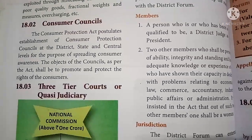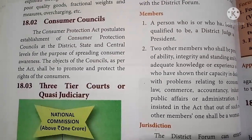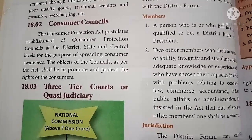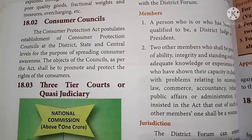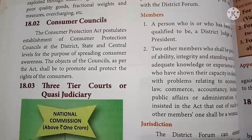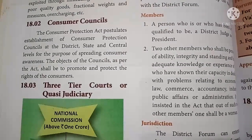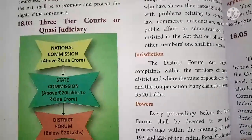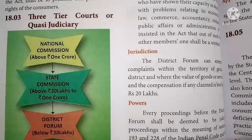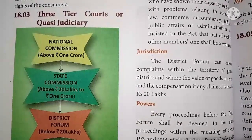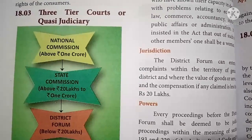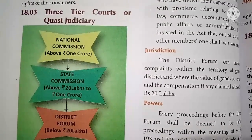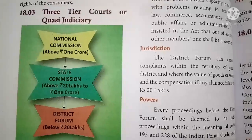The objectives of the council shall be to promote and protect the rights of the consumers. These consumer councils are established to protect the consumer from unscrupulous traders. As per the Consumer Protection Act, there is a three-tier quasi-judiciary: the national level commission, which accepts complaints of more than one crore.